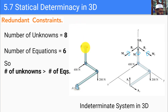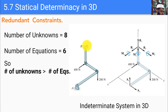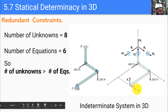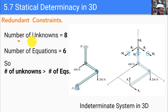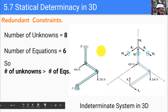We can also have a statically indeterminate system in three dimensions. Here we have a pipe system with a fixed support at B and a pin support at A. The fixed support alone gives six unknowns: Bx, By, Bz, Mx, My, and Mz. The pin support adds two more: Ay and Az. The total is eight unknowns, but we only have six equilibrium equations, so this is again statically indeterminate.